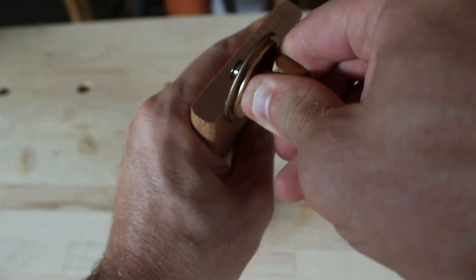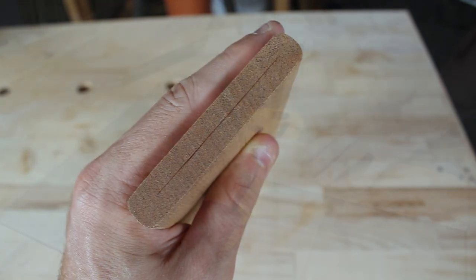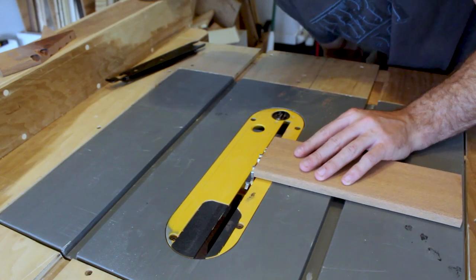Now I'll use a marking gauge to mark the center of the piece, and then I'll set the saw blade height to match that.